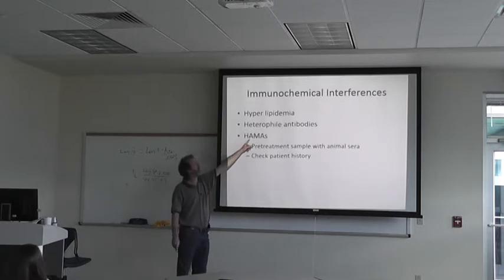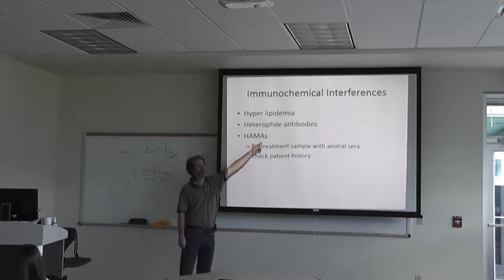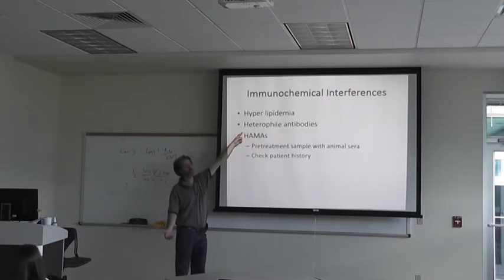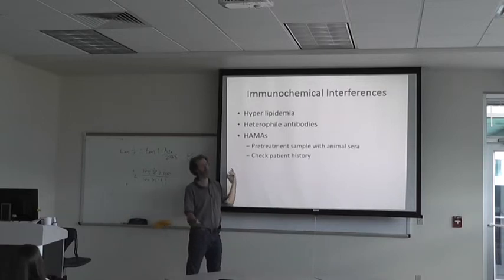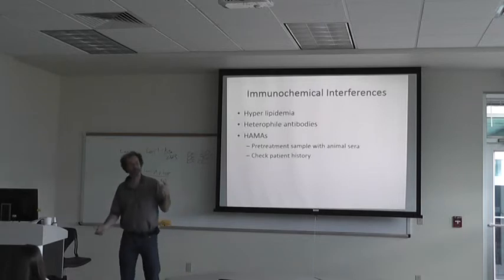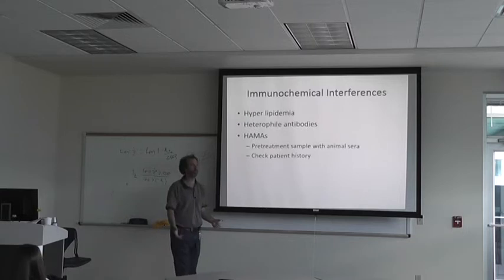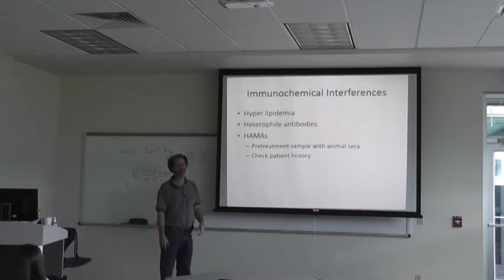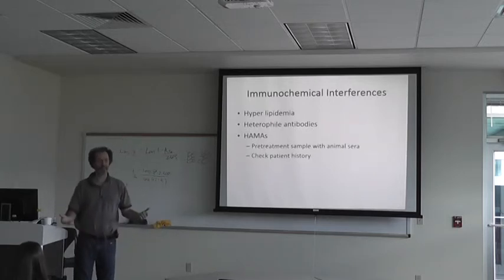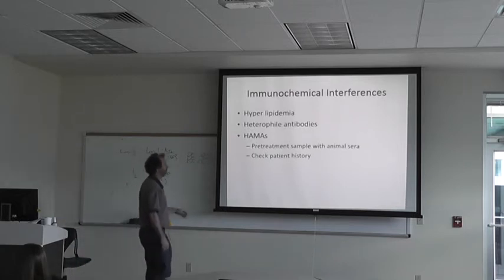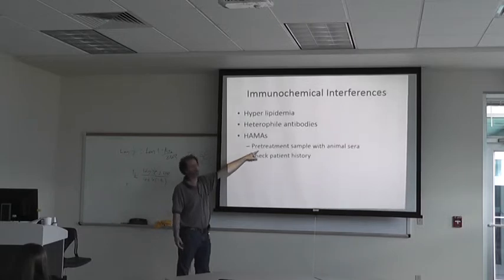HAMA stands for Human Anti-Mouse Antibodies — it's one of the more common heterophile antibodies that interfere. Most primary antibodies are made from mice, so if you have human anti-mouse antibodies in the sample, they're going to interfere with the immunological reaction. They will bind the primary antibody of that system. So typically you want to pre-treat the sample with mouse serum to tie up all the anti-mouse antibodies first.